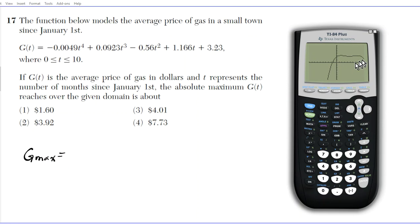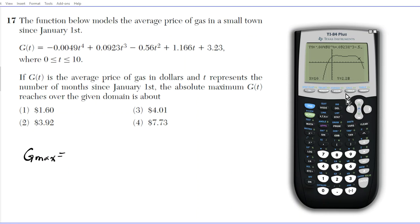I'll show you both methods. The nice thing about this problem is that the maximum is visible in the graphing window. In certain cases, the maximum might not be visible, so be careful to ensure you are covering the entire domain. The domain goes from 0 to 10, and that range is captured in the window. When looking for a maximum, you need a visual idea of where it's located. There appear to be two local maxima, and we need to determine which is the absolute maximum — the bigger one.